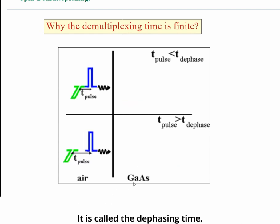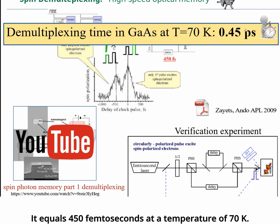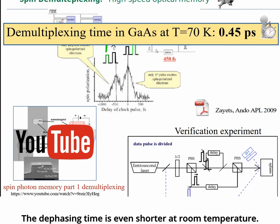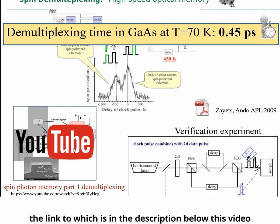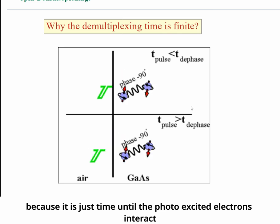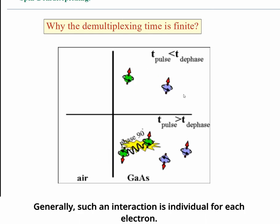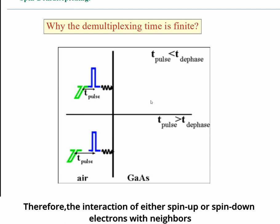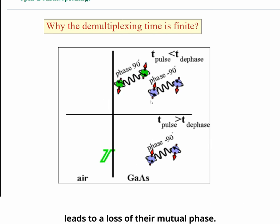I have measured the dephasing time in gallium arsenide. It equals 450 femtoseconds at a temperature of 70 Kelvin, and the dephasing time is even shorter at room temperature. The details of these measurements can be found in the cited publication or in the linked YouTube video. The dephasing time is very short because it is simply the time until the photo-excited electrons interact with many neighboring electrons in the electron gas. Such interactions are individual for each electron; therefore, the interaction of either a spin-up or spin-down electron with its neighbors leads to a loss of their mutual phase.